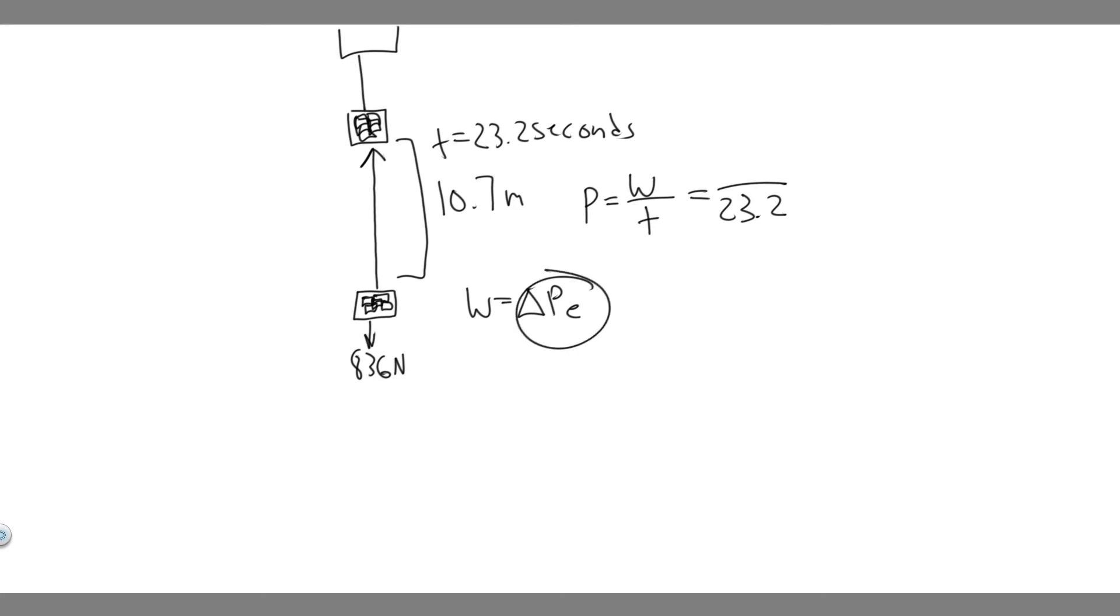So what we're going to do is just find the change in potential energy and that's going to give us the work. So we know potential energy is equal to mgh. And so what we're going to assume is where it starts is at a height of zero. So when you say the change in potential energy and something starts at zero, it's just going to be the final.